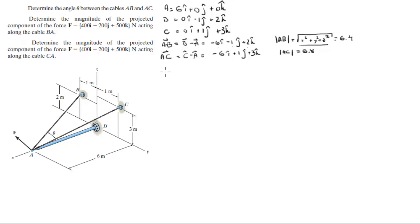Now to find the angle between them you know that the dot product of AB dot AC is the same as the magnitude of AB times the magnitude of AC times the cosine of the angle between them which is the angle that we're trying to find. So AB is negative 6I minus 1J plus 2K dot AC which is negative 6I plus 1J plus 3K. And that is equal to the magnitude of AB which is 6.4 times the magnitude of AC which is 6.8 times the cosine of the angle between them by definition.